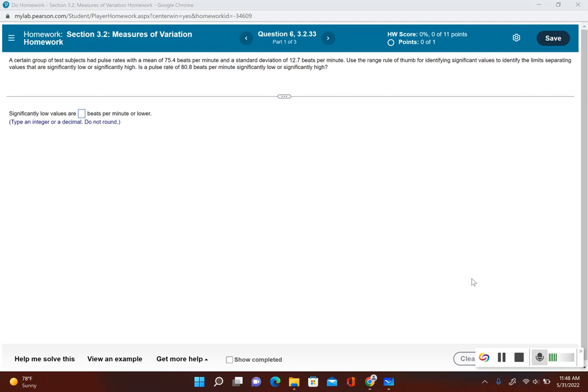Use the range rule of thumb for identifying significant values to identify the limits separating values that are significantly low or significantly high. Is a pulse rate of 80.8 beats per minute significantly low or significantly high?